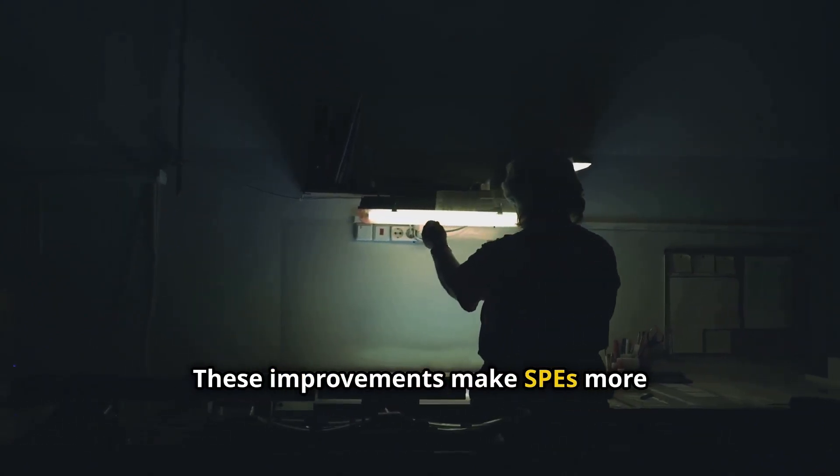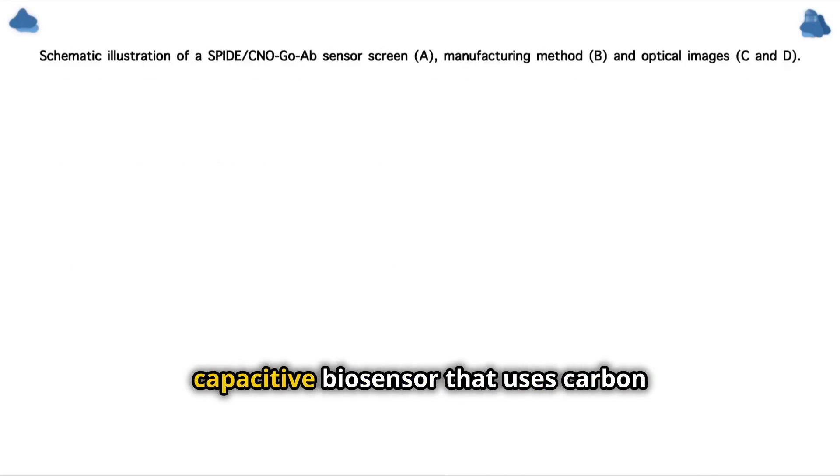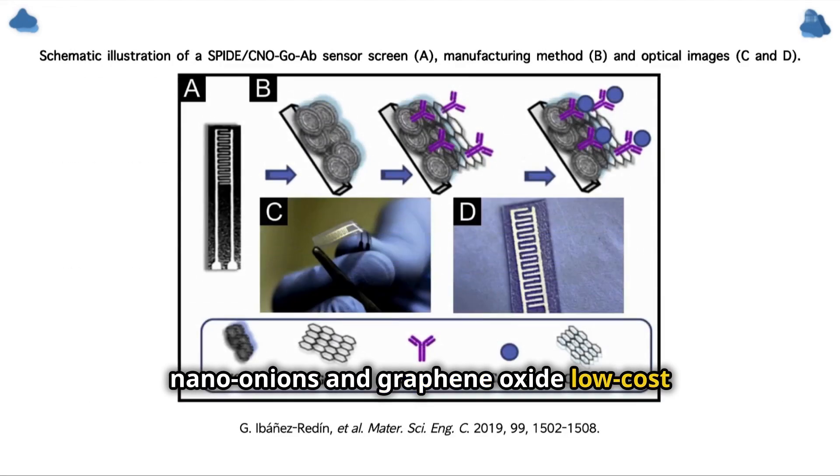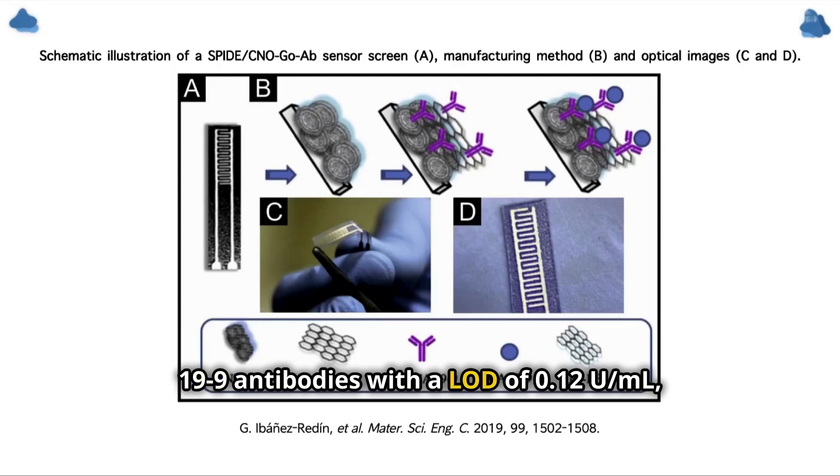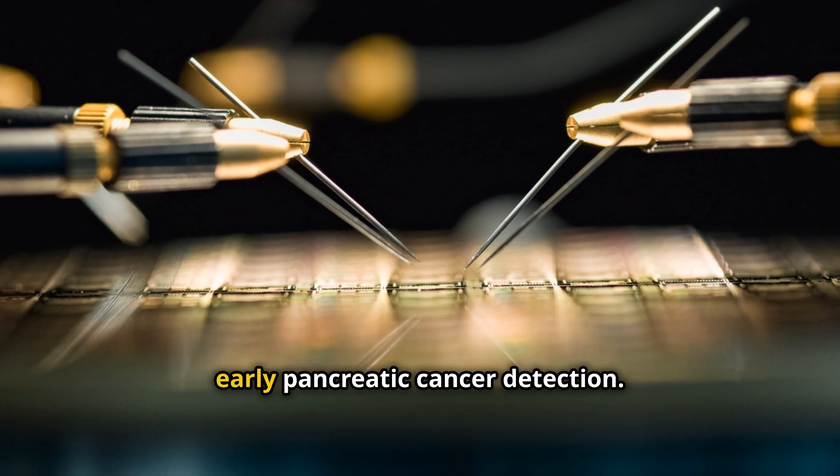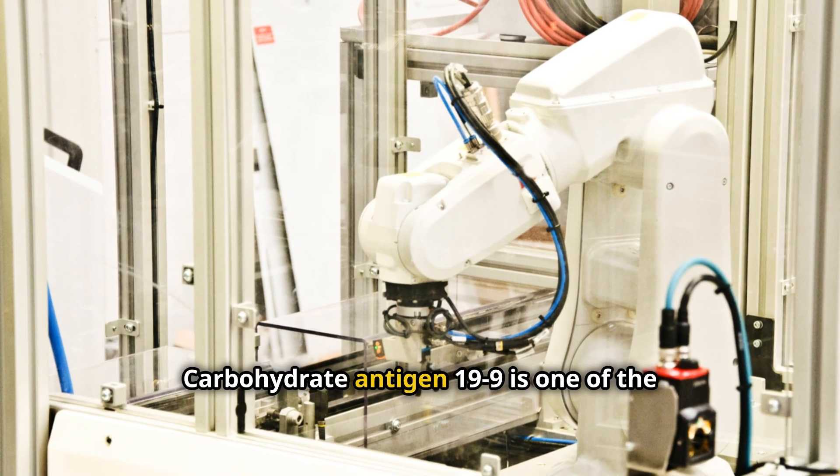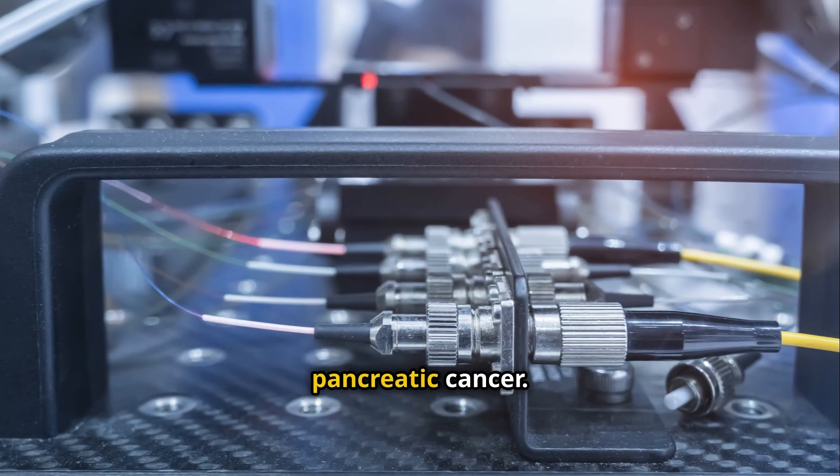These improvements make SPEs more reliable and versatile. Researchers recently reported a capacitive biosensor that uses carbon nano-onions and graphene oxide, low-cost interdigitated screen-printed electrodes, to immobilize anti-carbohydrate antigen-19-9 antibodies with a LOD of 0.12 UML, which is within the relevant range for early pancreatic cancer detection. Carbohydrate antigen-9 is one of the most widely used early biomarkers for pancreatic cancer.